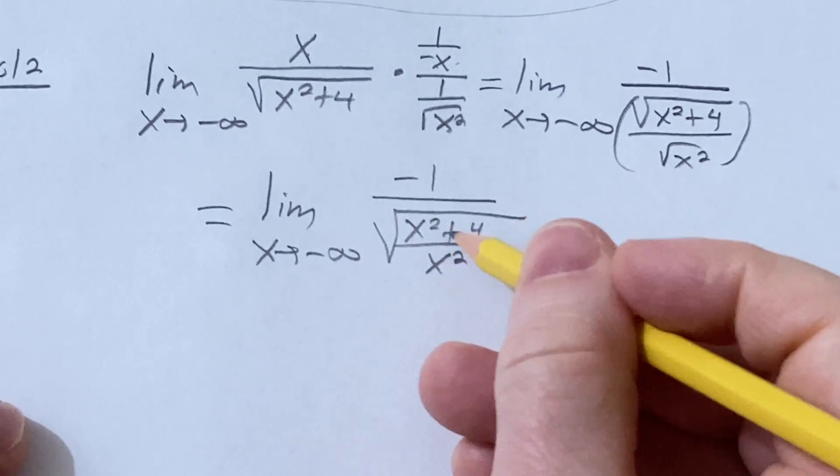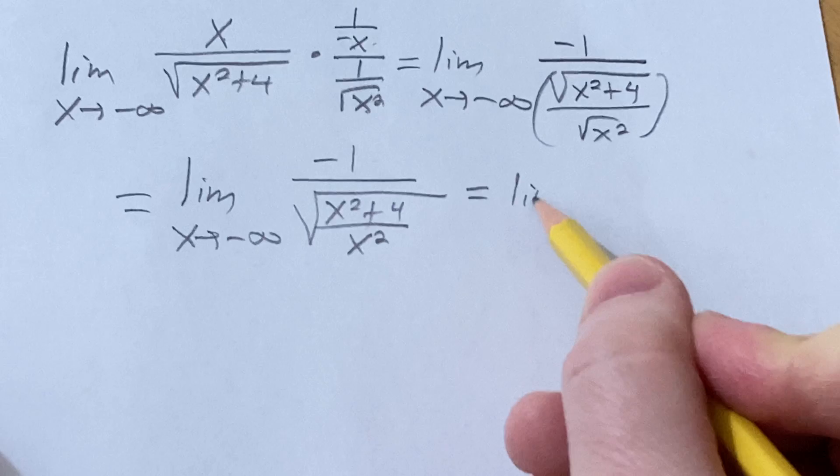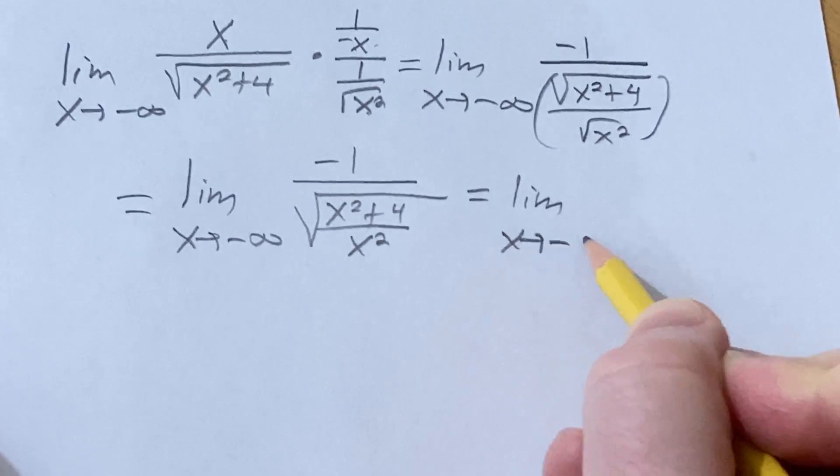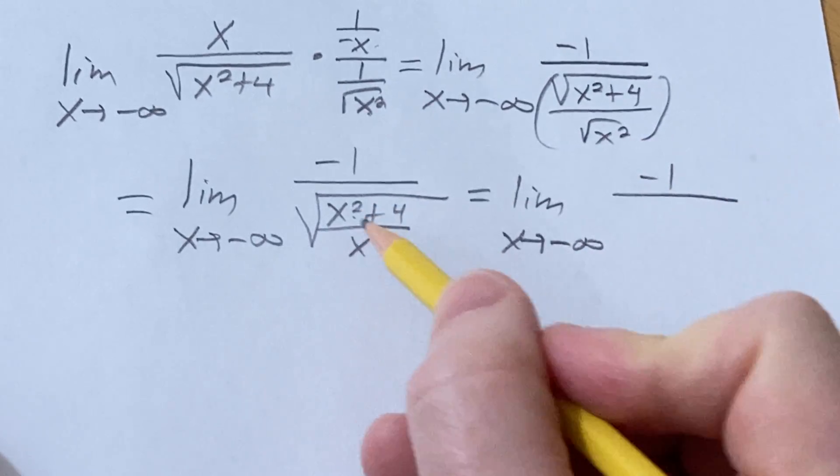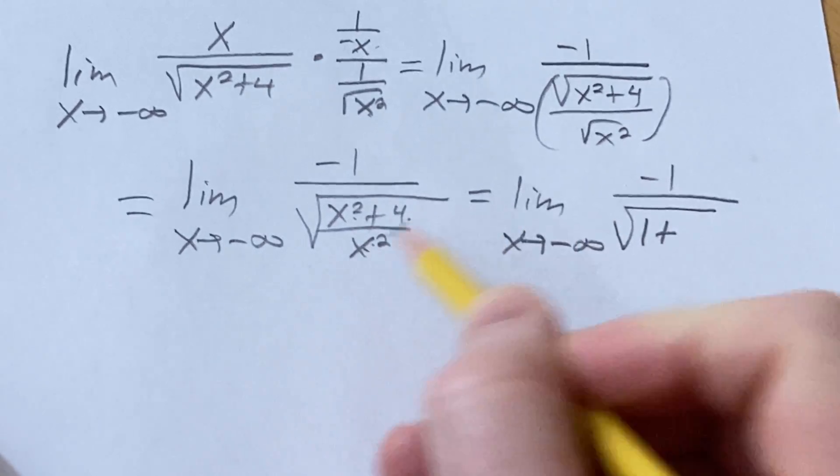And now you can break this up into a sum. So this is the limit as x approaches negative infinity of negative 1 over, so it's x squared over x squared, it's going to be 1 plus 4 over x squared.